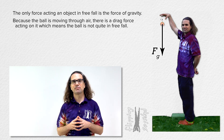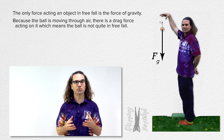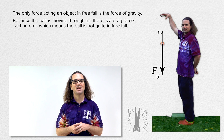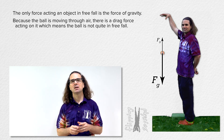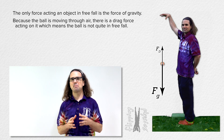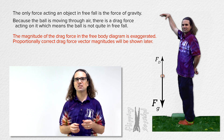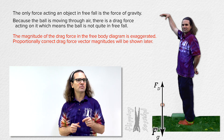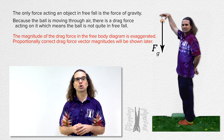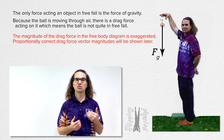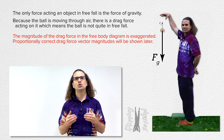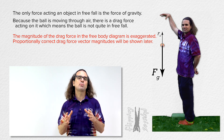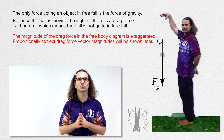The free body diagram of the forces acting on an object after it is released, at rest, in the air, has an upward force of drag and a downward force of gravity. The magnitude of the force of drag in the free body diagram has been greatly exaggerated here. If the force of drag were shown proportionally correct relative to the force of gravity, you would not be able to see it. Proportionally correct drag force magnitudes will be shown later.